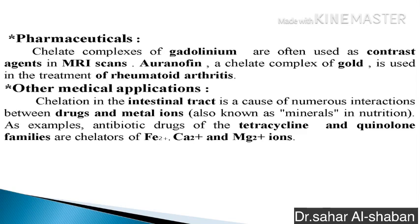Contrast agents are used in MRI scans, and complexes of gold are used in the treatment of rheumatoid arthritis. Another medical application of chelation is in the intestinal tract, where it is the cause of numerous interactions between drugs and metal ions — also known as minerals in nutrition. For example, antibiotic drugs of the tetracycline and quinolone families form chelates with iron, calcium, and magnesium ions.